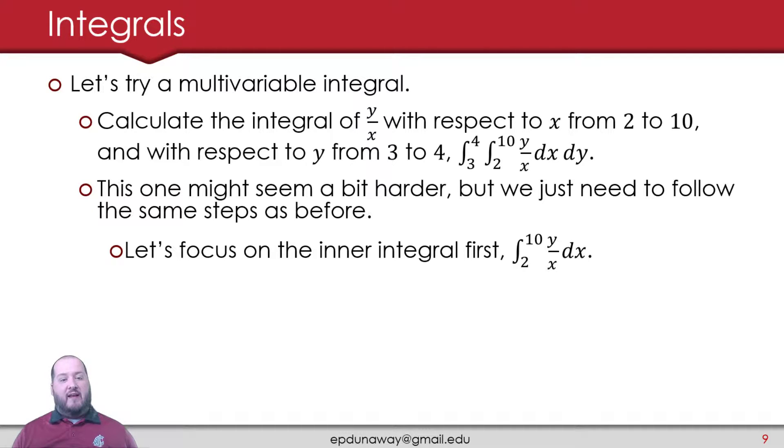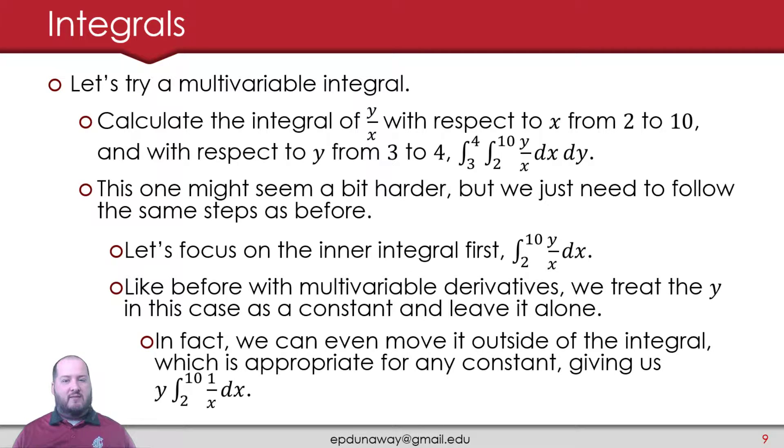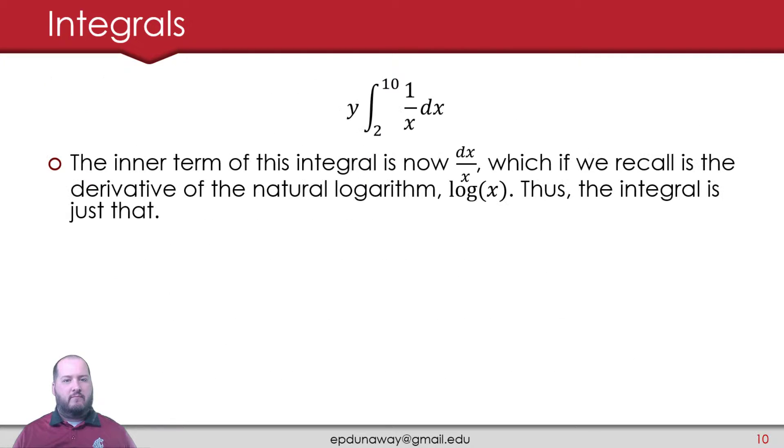First things first, let's focus on this inner integral. Let's work from the inside to the outside. And again, this is just like the backwards with a derivative, where we work from the outside to the inside. Now we work from the inside to the outside. On the inside, because my integrand is x, because I have the dx right there, I want to integrate this function with respect to x. So I'm going to treat the y in this case like a constant and leave it alone. In fact, one thing we can do, since y is a constant or with a constant in general, is I can move it outside of the integral. That's appropriate for any constants. That gives me the expression y times the integral from 2 to 10 of 1 over x dx.